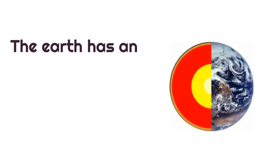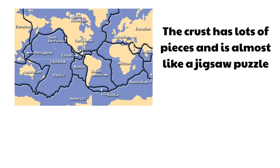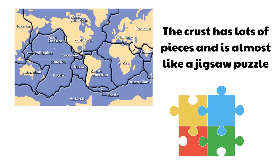Remember, the earth has an outer shell, and this outer shell is called the crust. The crust has lots of pieces, and it's almost like a jigsaw puzzle, and all the pieces are always moving.